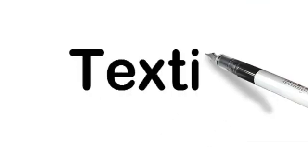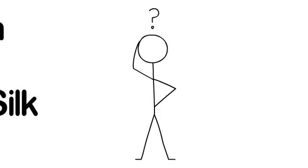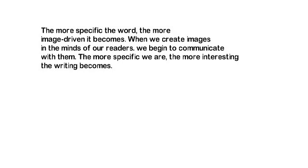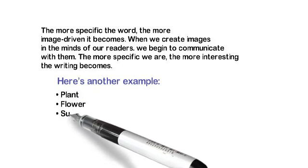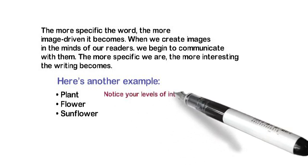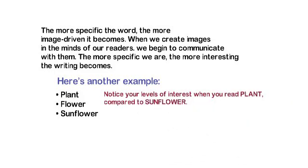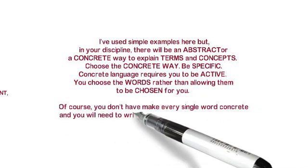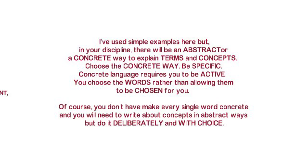Consider these words: if I say 'textile,' what do you imagine? Cloth and silk. Silk is very specific, whereas 'textile' could refer to a whole range of cloths, materials, and fabrics. But silk has a particular feel and touch to it — it's image-driven and creates an image in your mind. When we use image-driven words, we begin to communicate with our readers, and the more specific we are, the more interesting the writing becomes. Similarly: plant, flower, sunflower. The image in your mind when I say 'plant' versus 'sunflower' is much more concrete and engaging. In your discipline, there will be abstract or concrete ways to explain terms and concepts — choose the concrete way and be specific.